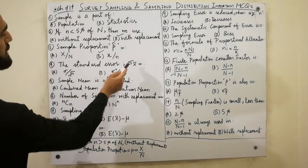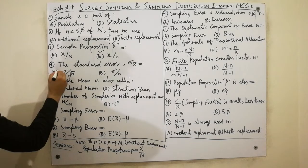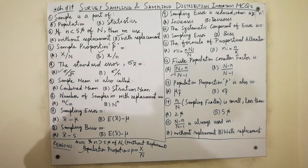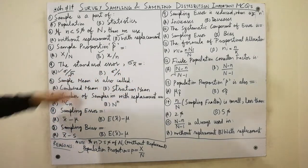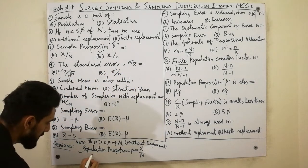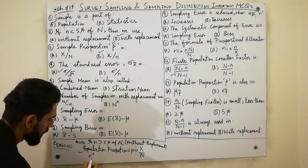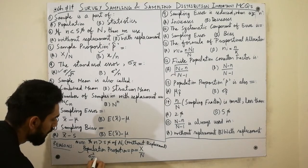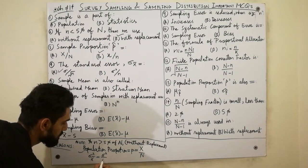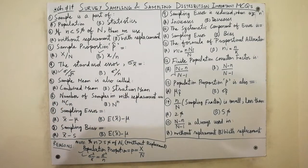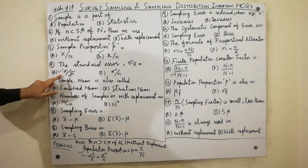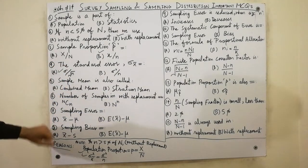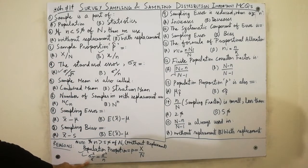The standard error sigma x-bar is equal to sigma divided by square root of n. We already know that. But variance of x-bar is always equal to sigma squared divided by n. Must remember: standard error sigma x-bar equals sigma over root n, and variance of x-bar equals sigma squared divided by n.